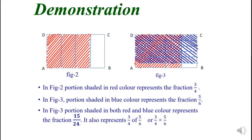And the portion in figure 3 shaded in both red and blue color represents the fraction 15 by 24, because there are total 24 cells and out of 24 cells, 15 cells are colored with both red and blue color. So the fraction is 15 by 24. But this portion represents 3 by 4 of 5 by 6, or 3 by 4 multiplied with 5 by 6. So here we got the product of 3 by 4 and 5 by 6 as 15 by 24.